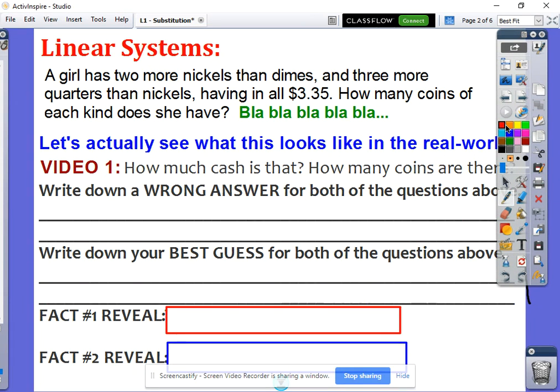So folks, what we're going to start off here with is you're going to watch a video and it's basically going to show you a guy that's maybe thinking about a question like this, or a girl. A girl has two more nickels than dimes and three more quarters than nickels, having $3.35 in all. How many coins does she have?